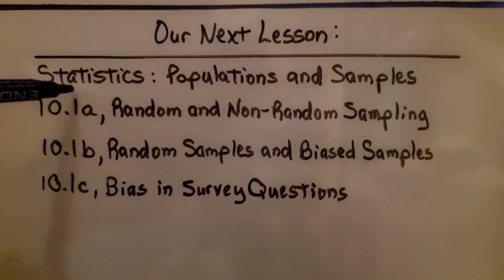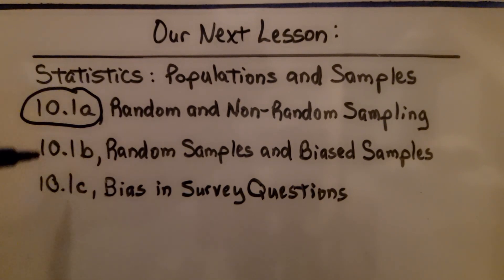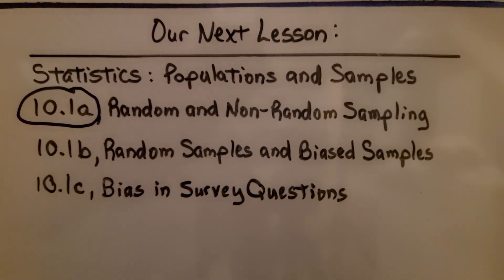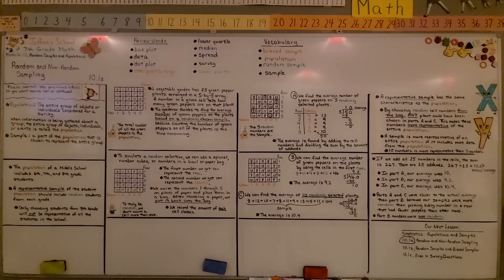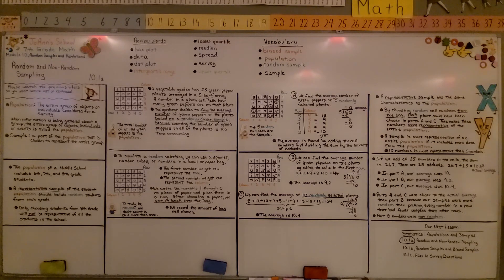We're finished with the first part of 10.1. We're going to move on to 10.1b — random samples and biased samples. Remember, the population is the entire group of objects or individuals considered for a survey, and the sample is a part of that population chosen to represent the entire group. Have a great day and join me for the next part of the lesson.